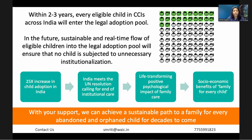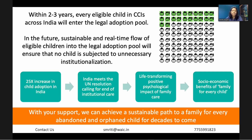Ultimately, we want that within two years — and hopefully sooner — every eligible child in child shelters across India will enter the legal adoption pool. In the future, there would be a sustainable and prompt flow of children into the legal adoption pool, so no child is subjected to unnecessary institutionalization and children can reach families quickly. This would not only ensure a 25x increase in child adoption in India, it will also help India meet the UN resolution calling for an end to institutional care. As an adoptive parent myself, I can vouch for the life-transforming positive impact on children when they reach families. With your support, we can achieve a sustainable path to a family for every abandoned and orphaned child for decades to come.